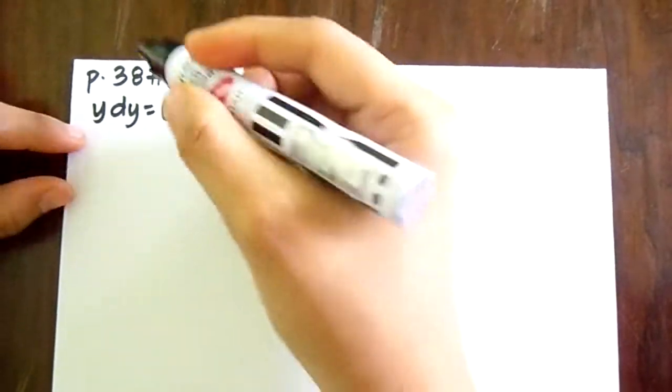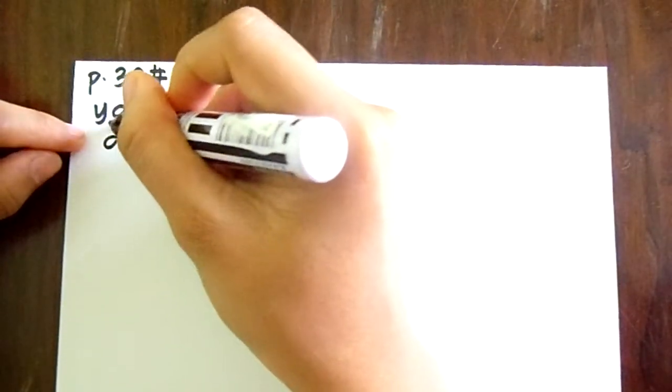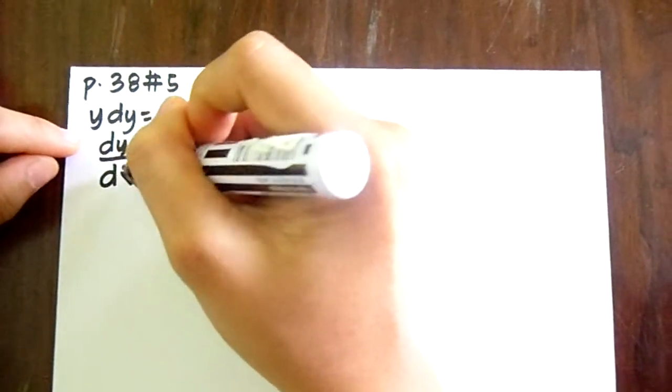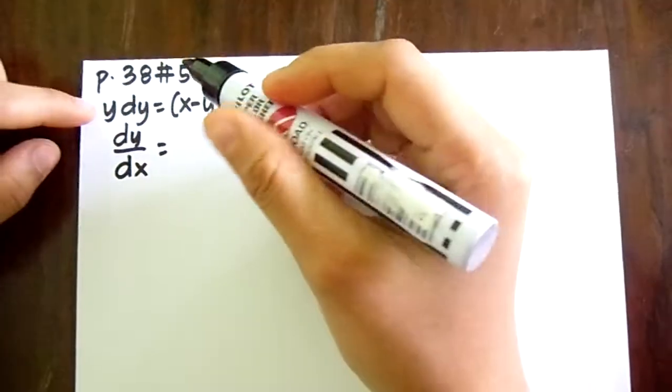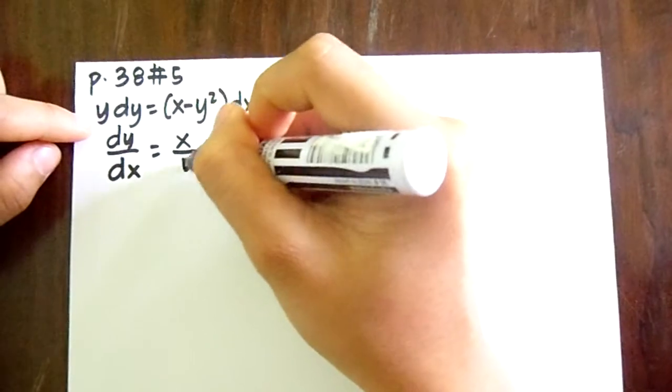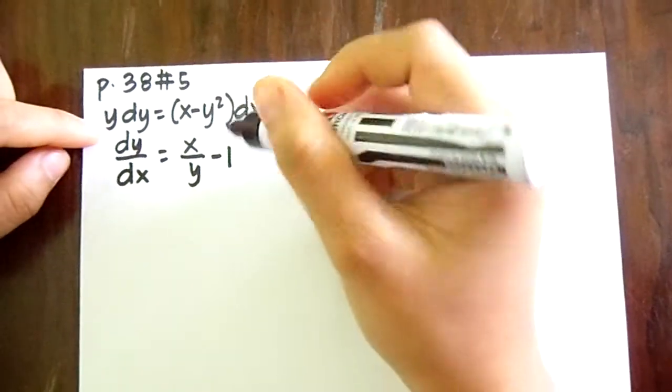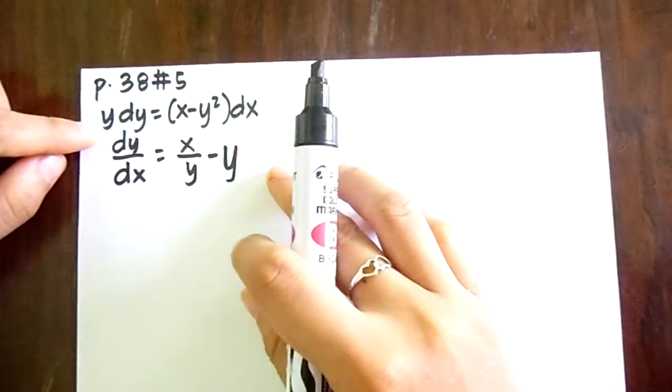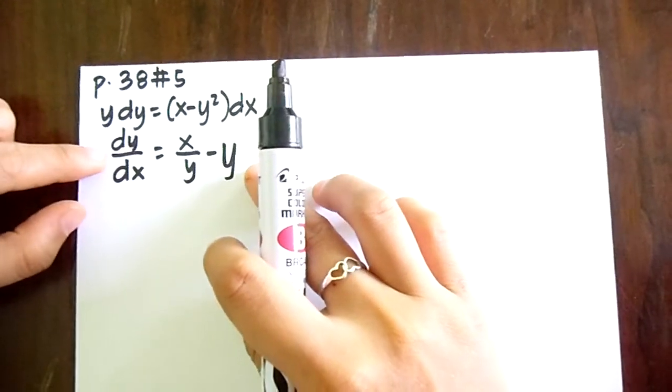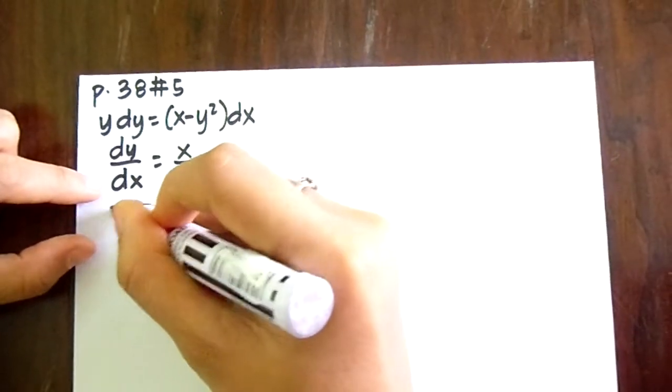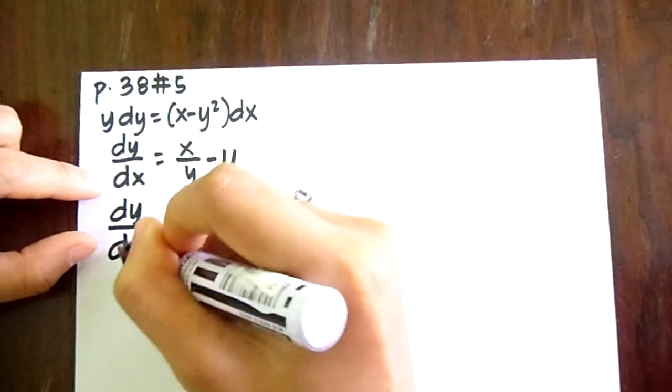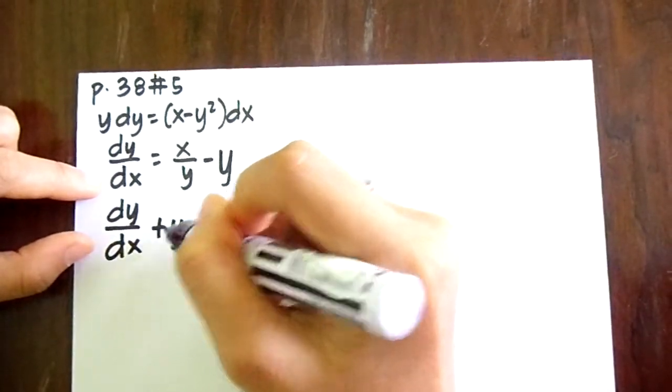So to solve this, we must separate dy over dx, and we divide this y here to this term, so it becomes x over y minus y.